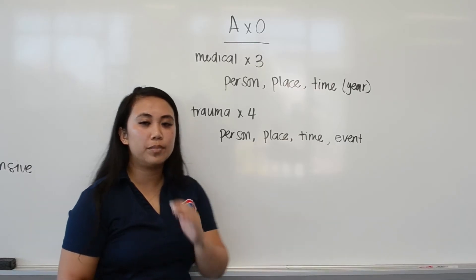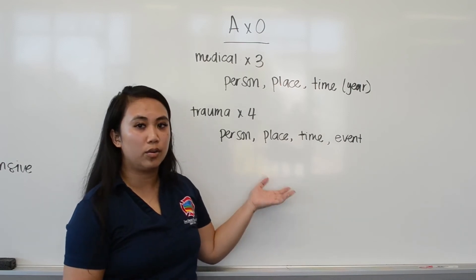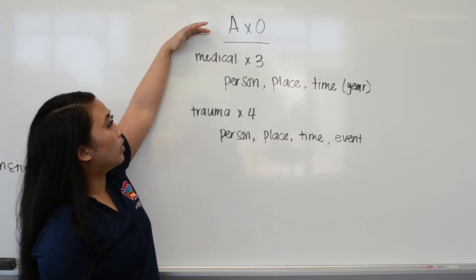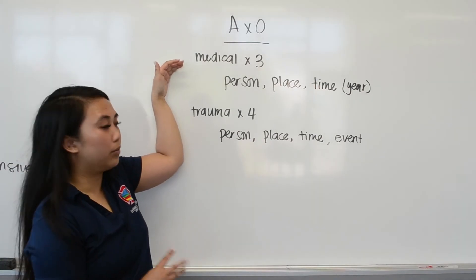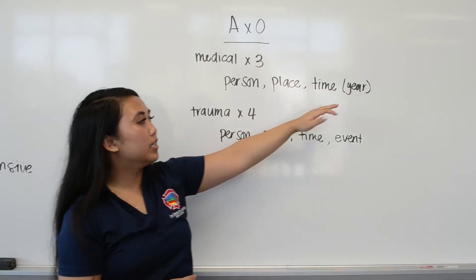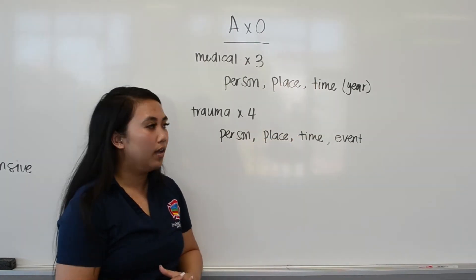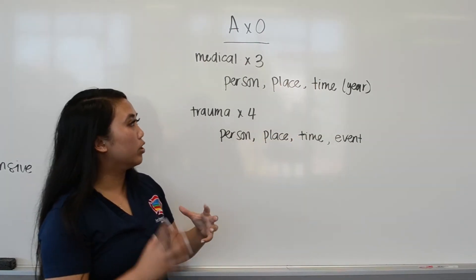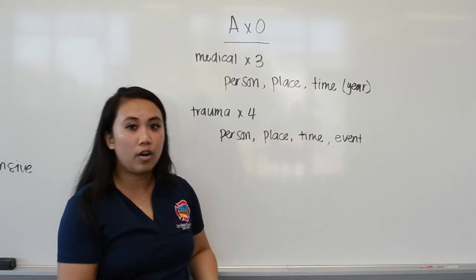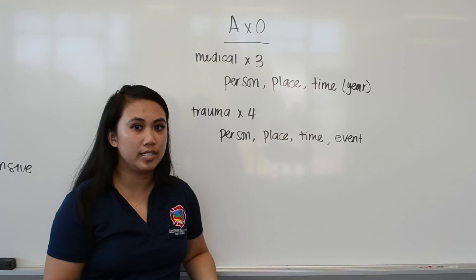From the AVPU, if your patient wakes up, we now have to assess their orientation with A and O questions. For medical patients, there are three questions: person — what's your name? Place — where are you right now? And time — what year is it? Just ask the year, not the month or day, to keep it more general.